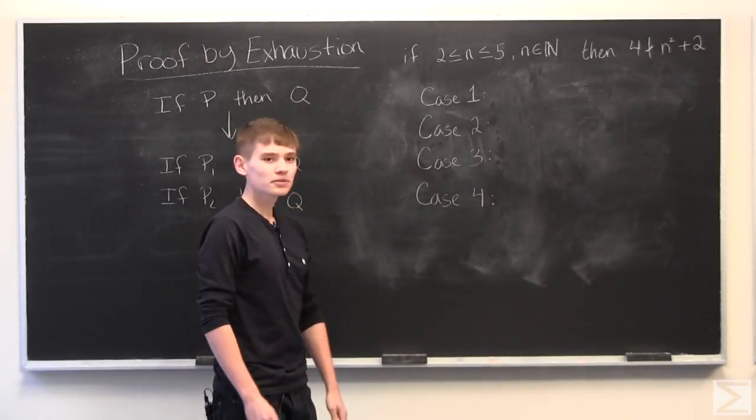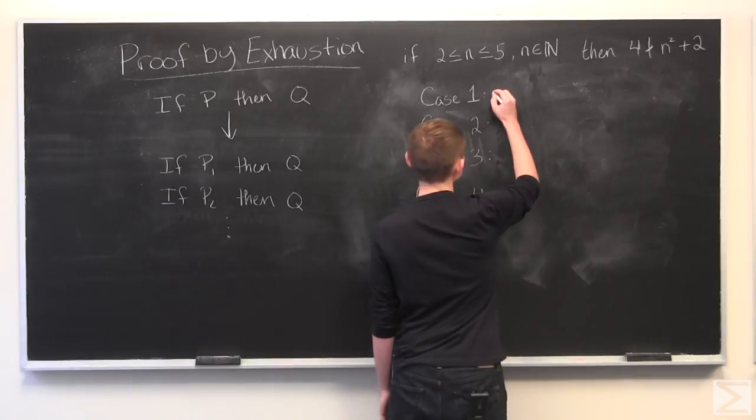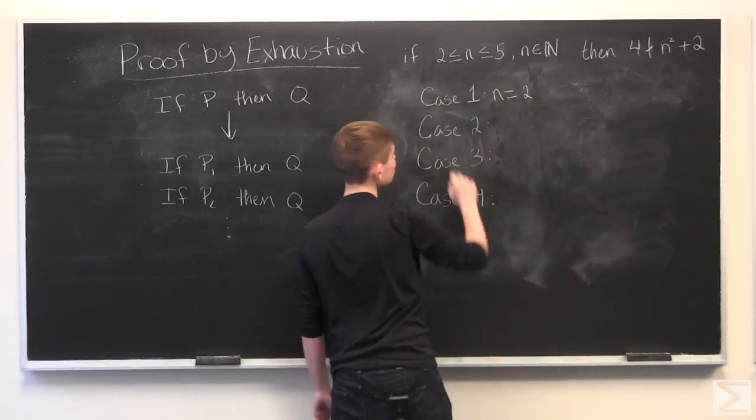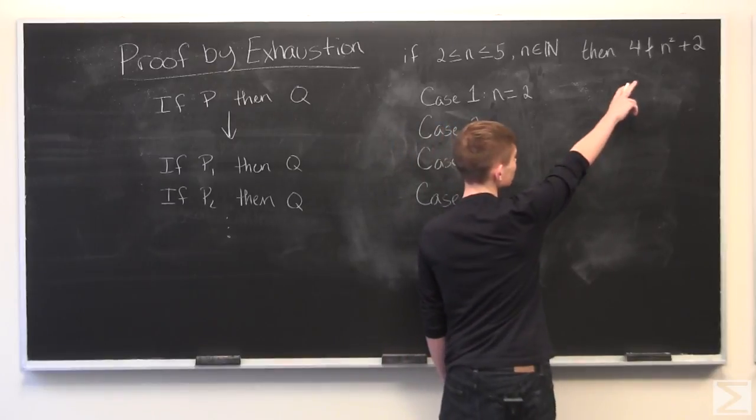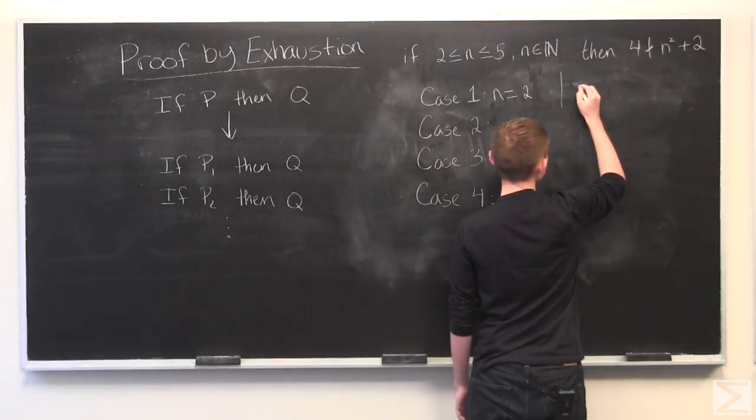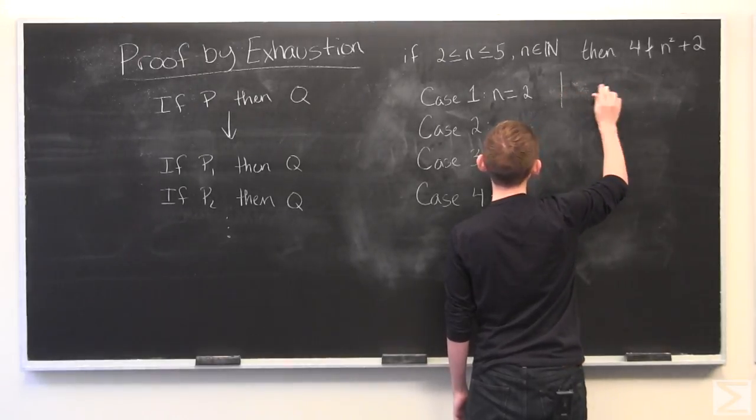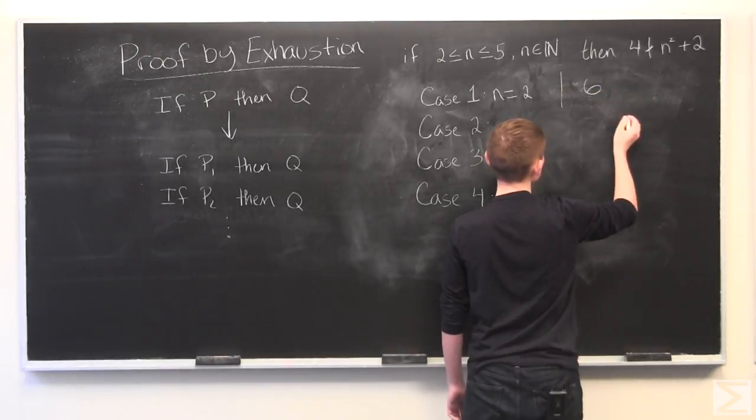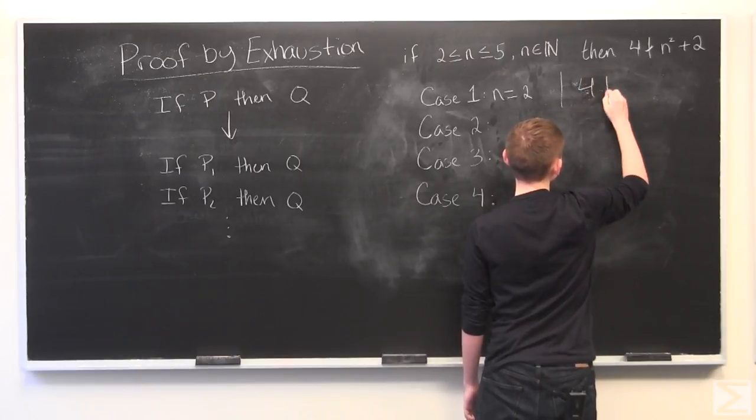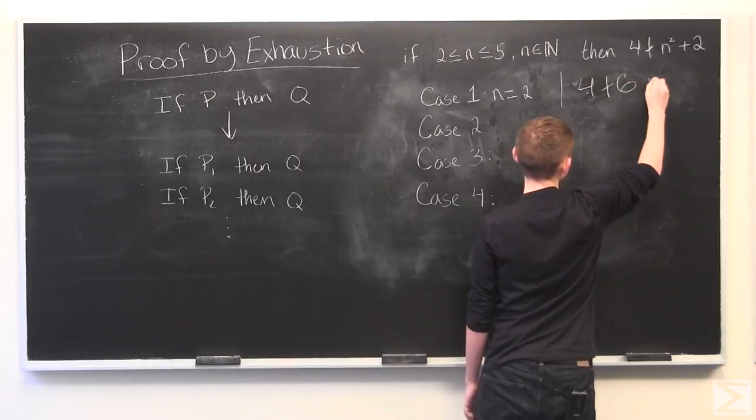And so what we're going to do is break it up into cases. So if we have N equal to 2, our first case, we plug it into N squared plus 2, and N squared plus 2 is 4 plus 2 is 6. 4 doesn't divide 6, so we're good.